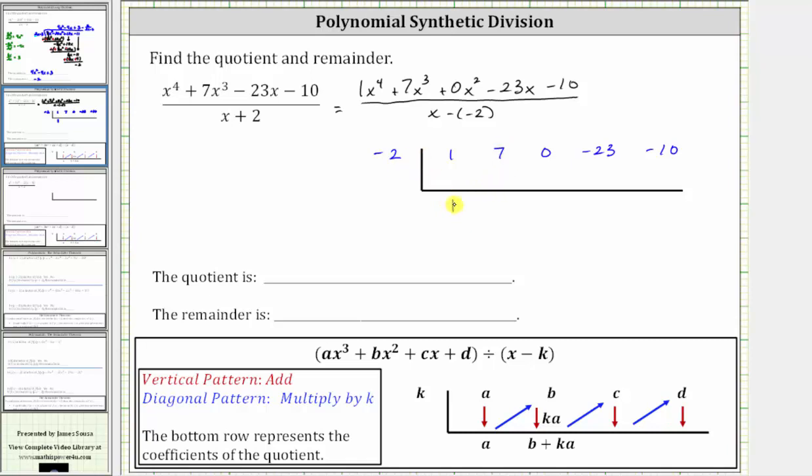So one times k or one times negative two is negative two. We place negative two on the diagonal or in the next column, and then we add vertically, seven plus negative two is positive five.